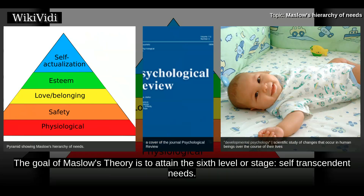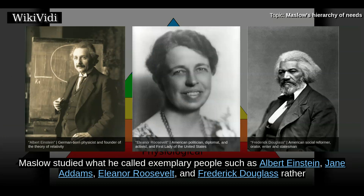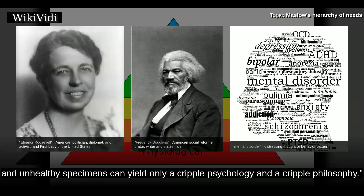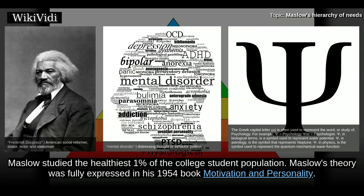The goal of Maslow's theory is to attain the sixth level or stage: self-transcendent needs. Maslow studied what he called exemplary people such as Albert Einstein, Jane Addams, Eleanor Roosevelt, and Frederick Douglass, rather than mentally ill or neurotic people, writing that the study of crippled, stunted, immature, and unhealthy specimens can yield only a cripple psychology and a cripple philosophy. Maslow studied the healthiest one percent of the college student population.